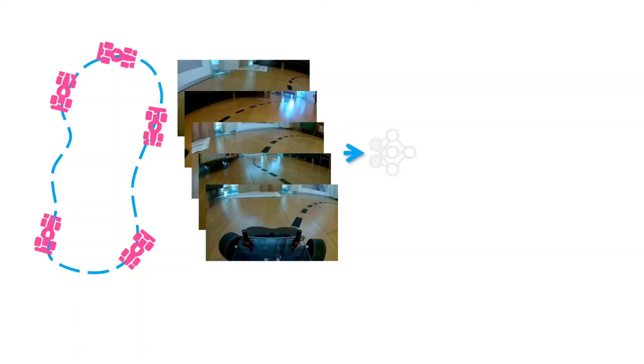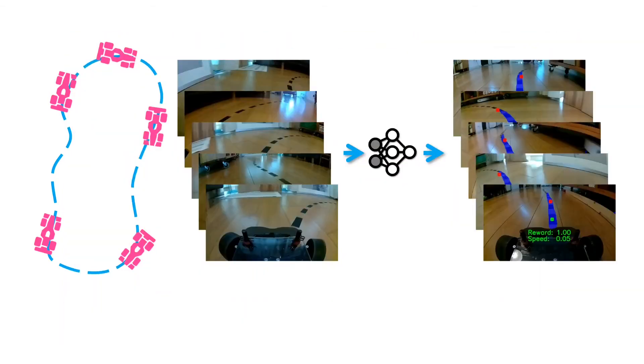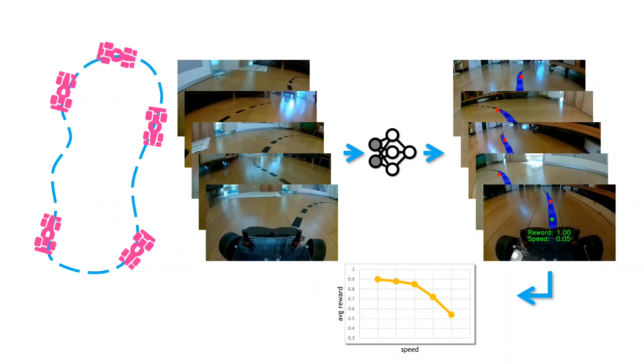Offline, these images are passed through a trained neural network to calculate a reward. The reward is a measure of how well-centered the track is in the image. So we get the reward values for each of the images and then average them to produce a reward versus speed curve. The higher the reward values, the better the performance of the policy.